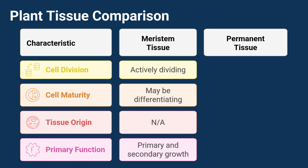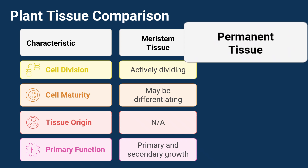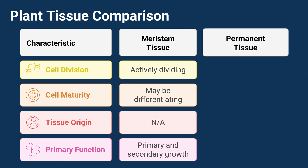Permanent tissue. Now, permanent tissues are a bit different. They started out as meristematic tissues, but they've settled down and lost their ability to divide. Their cells are all grown up and specialized for specific tasks.